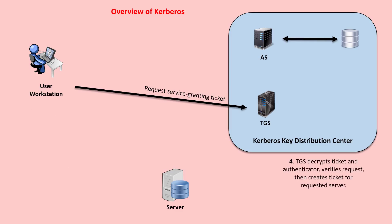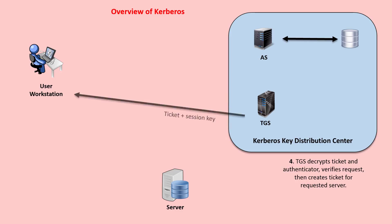The ticket-granting server decrypts the ticket and authenticator, verifies the request, then creates a ticket for the requested server. The ticket-granting server returns the ticket to the user workstation. The returned message contains two copies of a server session key: one encrypted with the client password and one encrypted with the server's password.